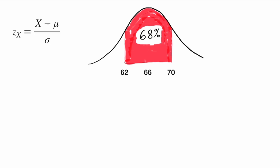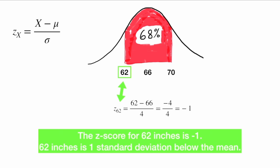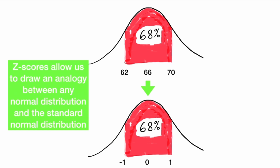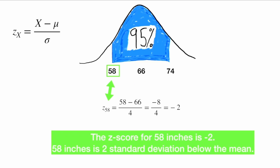For instance, when we look at height and compute the z-scores of these values, we see that the z-score for 62 inches is negative one — 62 inches is one standard deviation below the mean. Similarly, the z-score for 70 inches is one — 70 inches is one standard deviation above the mean. So z-scores allow us to draw an analogy between any normal distribution and the standard normal distribution. We have the distribution for height, and we draw an analogy to a standard normal z-distribution, and then we can use the empirical rule to tell us that 68% of observations are within one standard deviation of the mean.